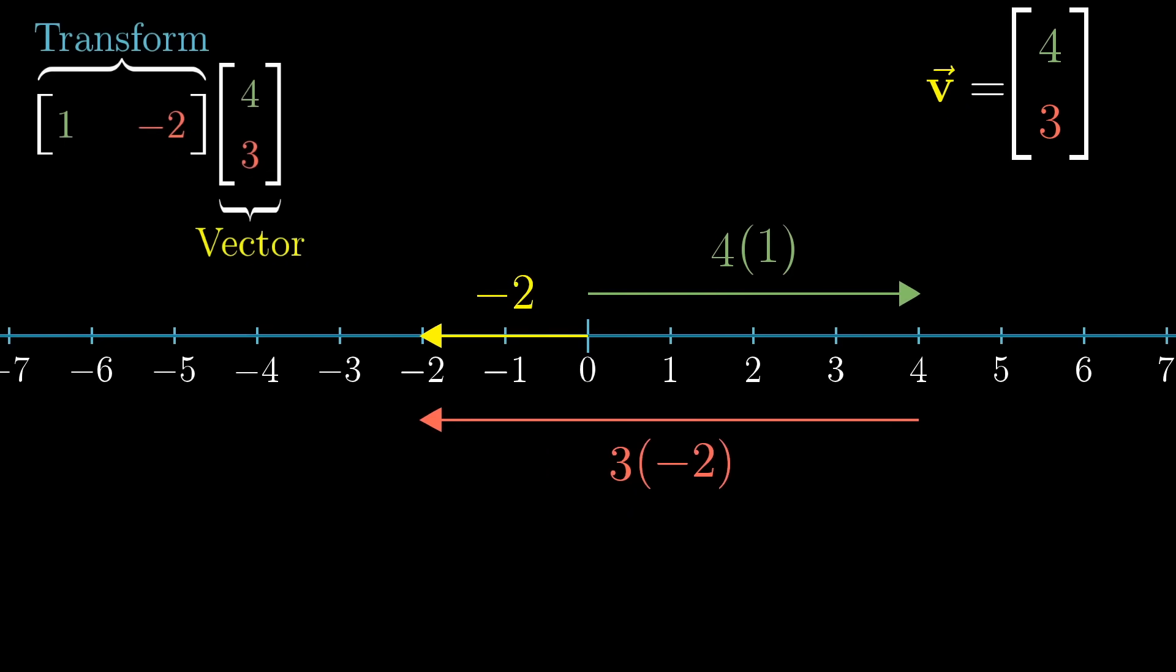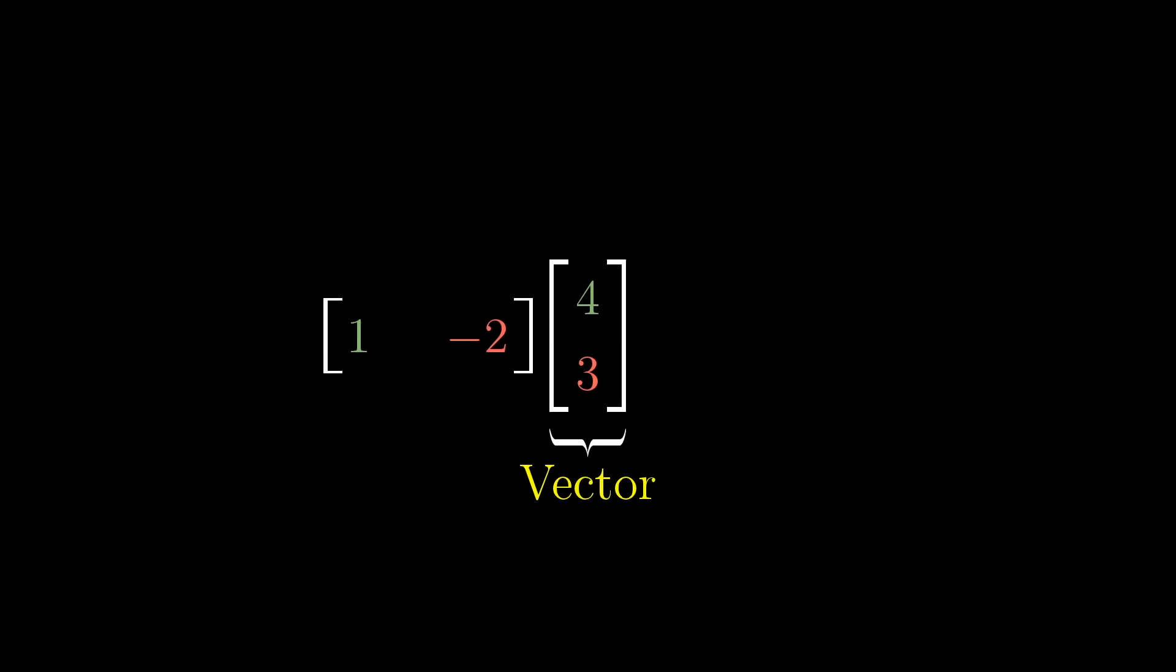When you do this calculation purely numerically, it's matrix-vector multiplication. Now, this numerical operation of multiplying a 1 by 2 matrix by a vector feels just like taking the dot product of two vectors. Doesn't that 1 by 2 matrix just look like a vector that we tipped on its side?